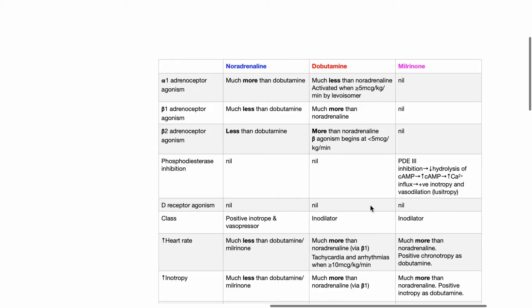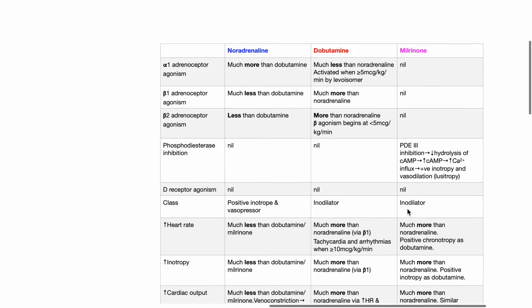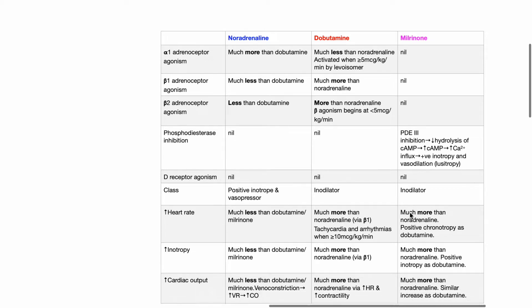All three drugs do not act at the dopamine receptor. Noradrenaline is a positive inotrope and vasopressor. Dobutamine is an inodilator. Milrinone is also an inodilator.